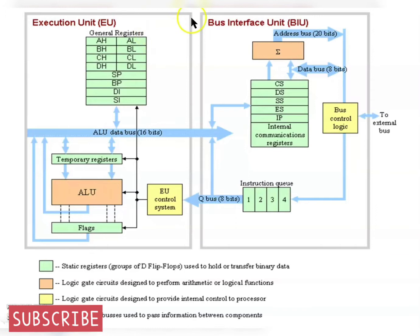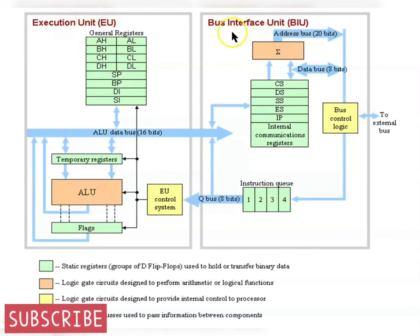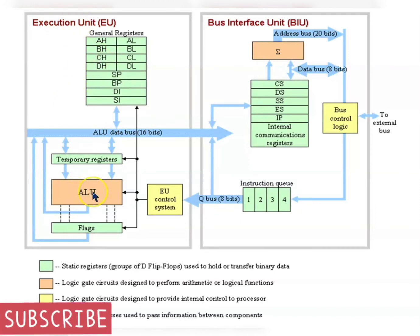Let's look at the block diagram of the Intel 8088 microprocessor. It has two main sections: the execution unit and the bus interface unit. The execution unit takes care of processing, including the ALU. The bus interface unit controls the passing of information between the processor and memory, I/O ports, and so on.